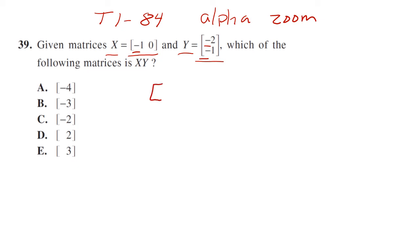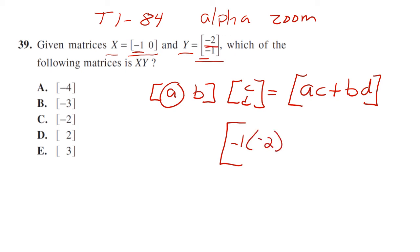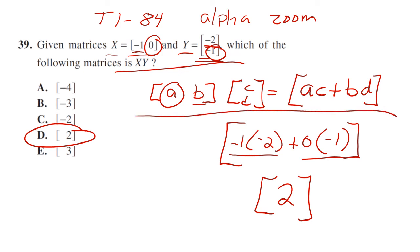If you don't do that, you just need to know how to multiply matrices. So [a b] times [c; d] equals a times c plus b times d. So we're going to have negative one times negative two plus zero times negative one. That means we're going to have our answer: negative one times negative two is 2, zero times negative one is 0. So your answer is 2. Whichever way is faster, do it. This is a hard question because you could get confused on your negatives. The answer is D.